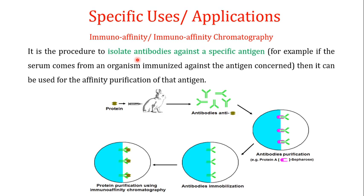In immuno-affinity chromatography, if you have a protein of interest against which you want to make antibodies, you inject this protein into an animal — in this image, a rabbit. The immune system of the rabbit will generate an antibody against this protein. In the next step, you purify these antibodies that have been generated in the rabbit's body, using affinity chromatography.